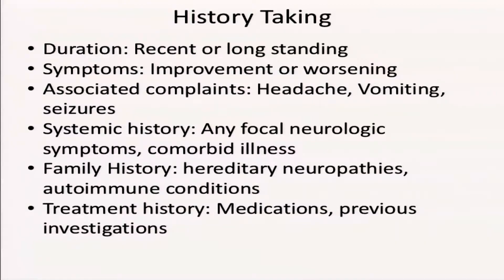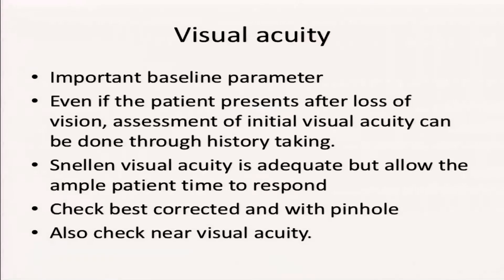Associated systemic history is very important: history of headache, vomiting, and other systemic features. Family history is very important, particularly for hereditary neuropathies such as Leber's hereditary optic neuropathy or other autosomal dominant hereditary neuropathies. Treatment history is also critical — you need to know what medications the patient has previously taken, as they may be causing a toxic neuropathy, as well as any previous investigations. This gives you a good idea of a provisional or possible diagnosis before moving to examination.